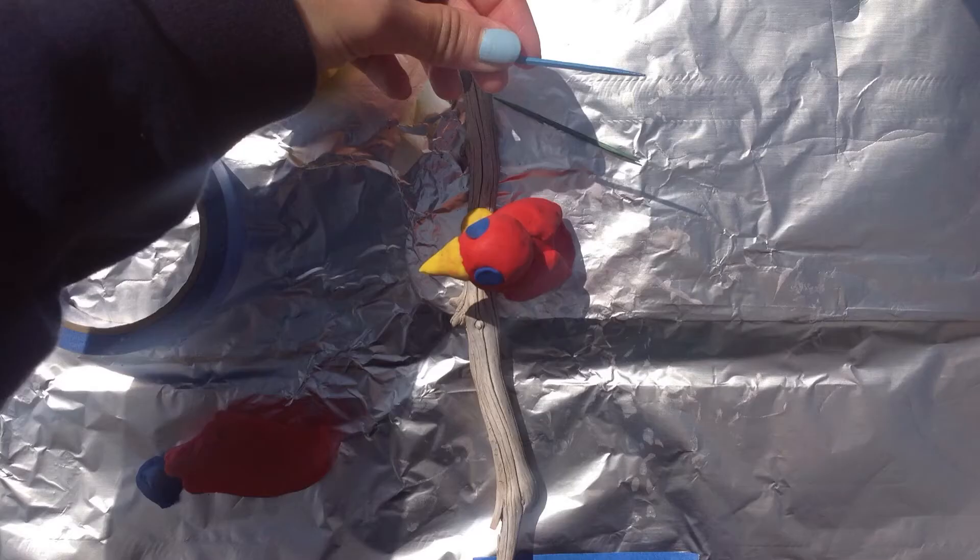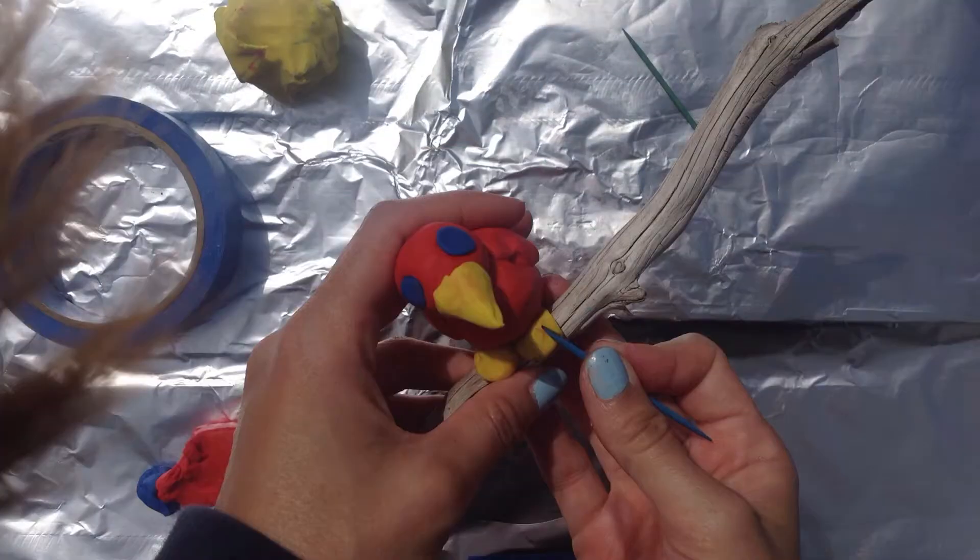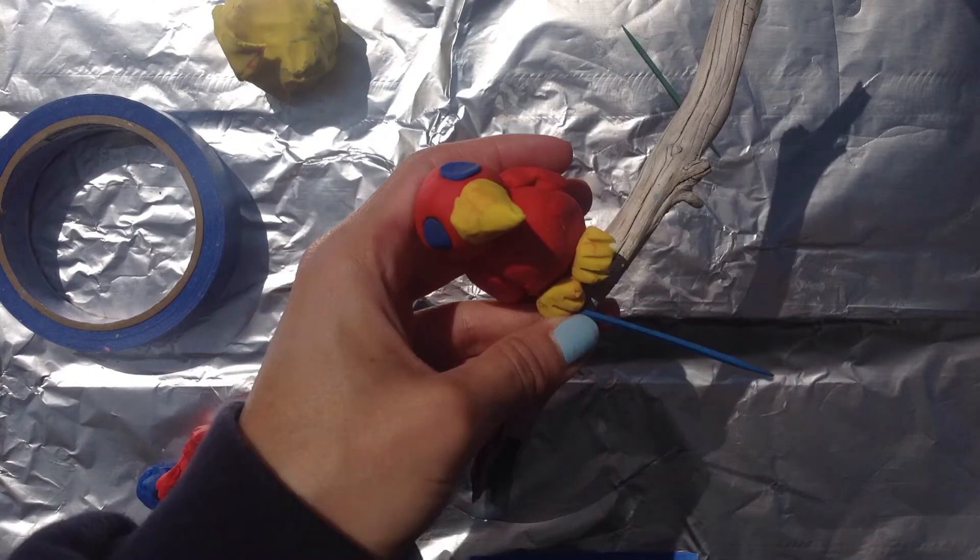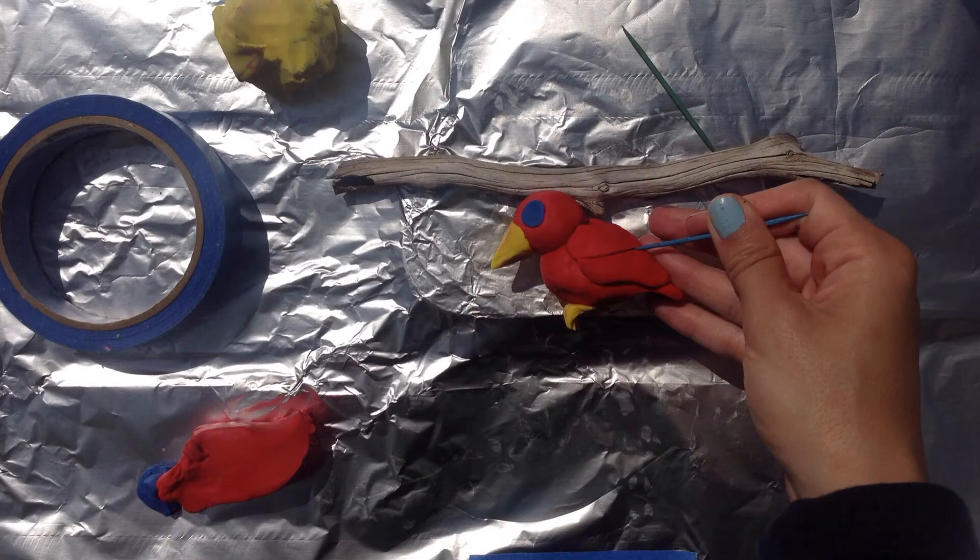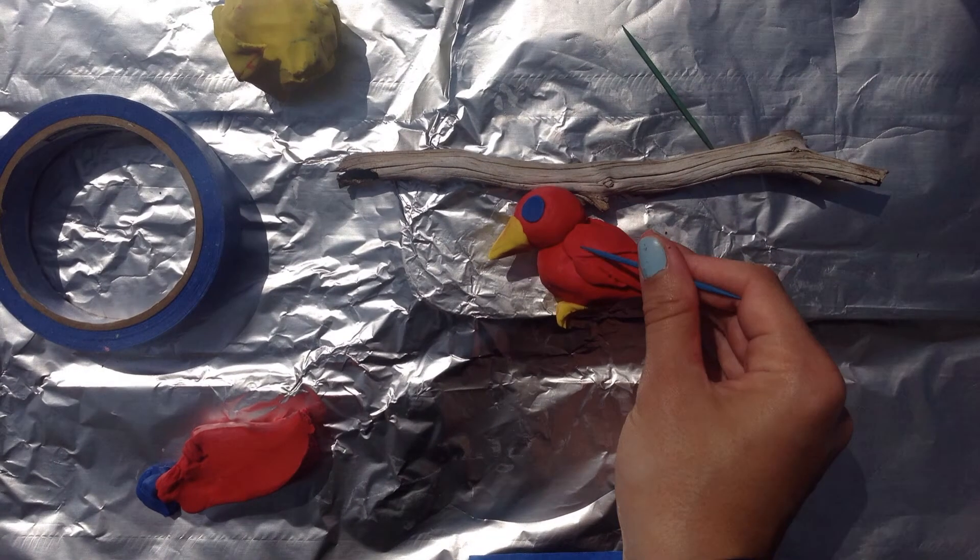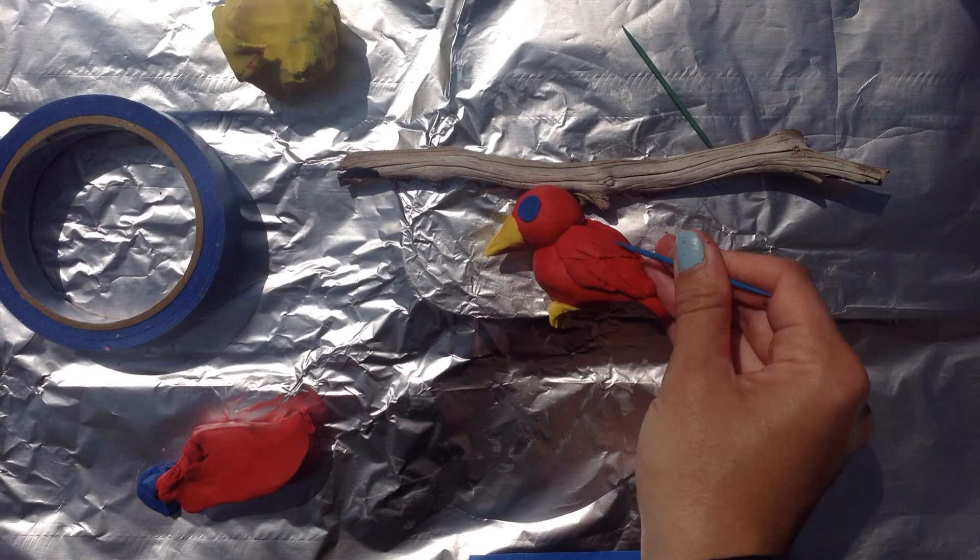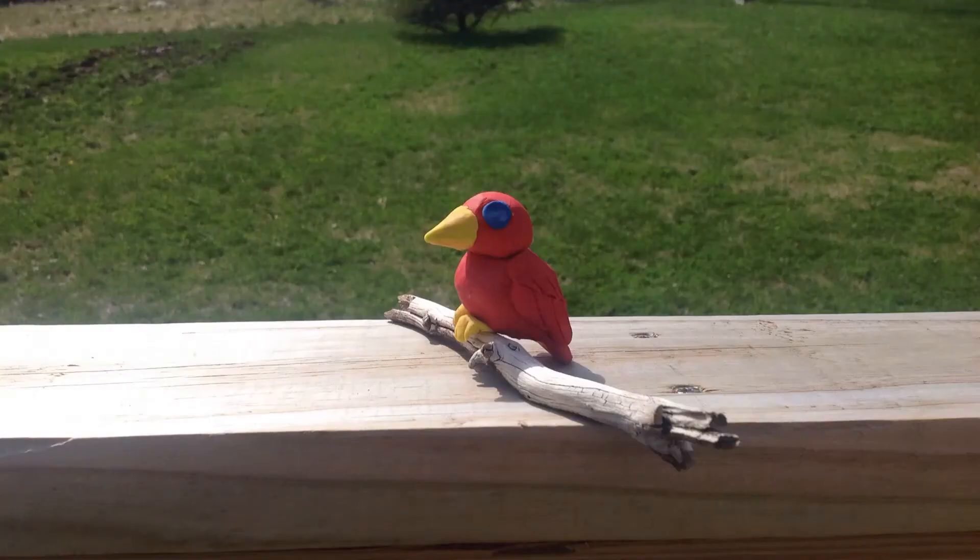Then use your toothpick to make the details. First we're going to show the feet, then the lines of the feathers and the wings.